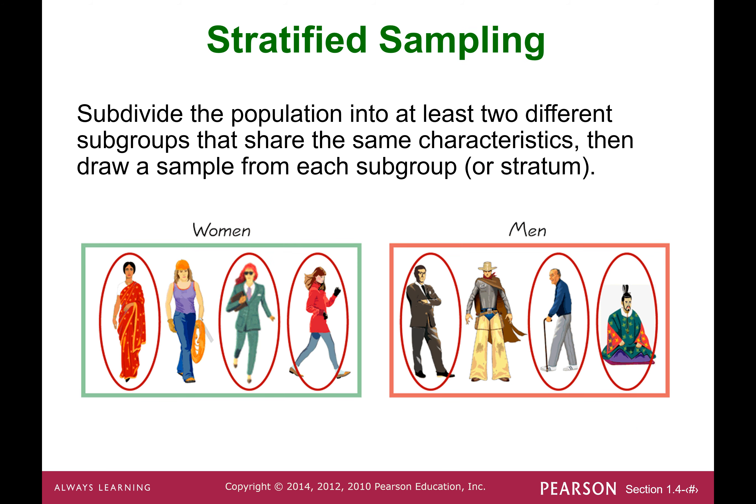The third method is stratified sampling. You subdivide the entire population into at least two different subgroups. For example, with U.S. citizens, you can divide into male and female, then pick a sample from the women's group and a sample from the men's group, and put them together. That becomes your general sample — you subdivide the population into subgroups to get a stratified sampling result.